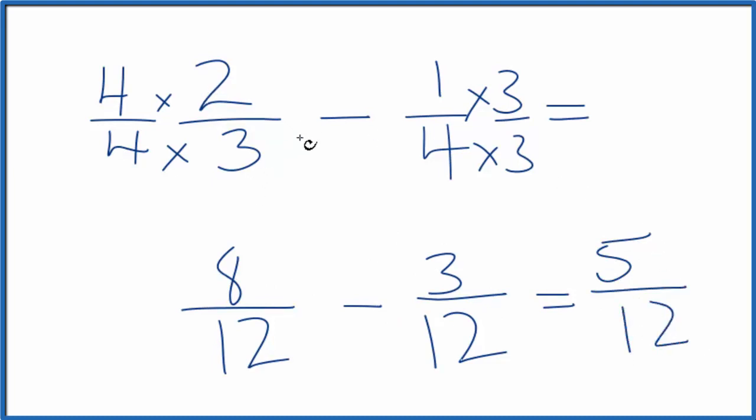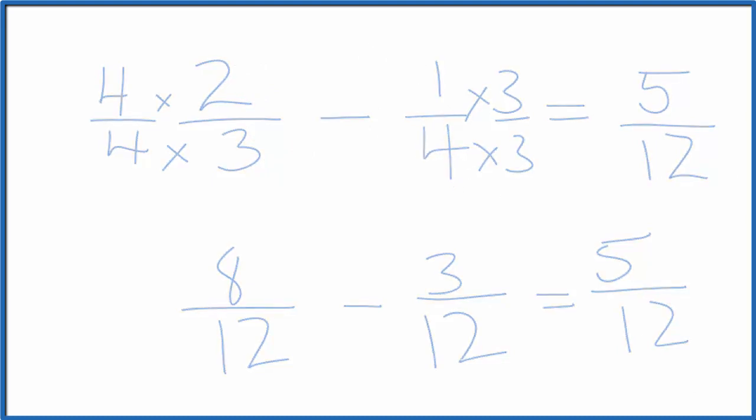And 2 thirds minus 1 fourth gives us the fraction 5 twelfths. This is Dr. B doing the subtraction for 2 thirds minus 1 fourth. Thanks for watchin'.